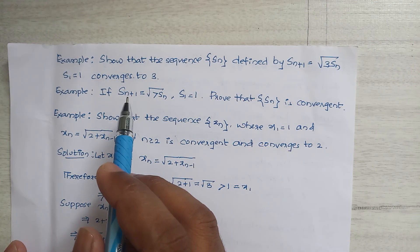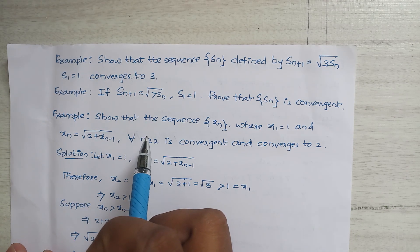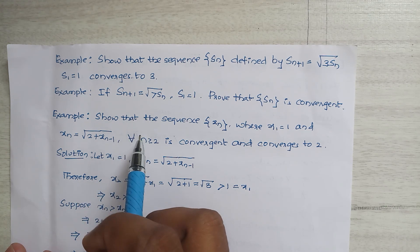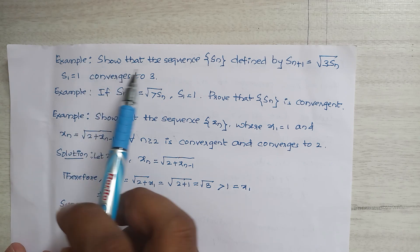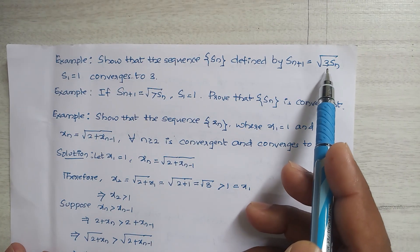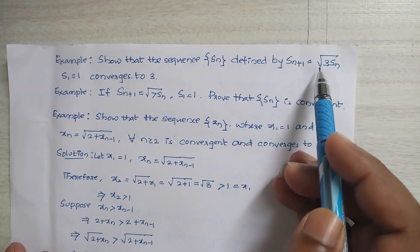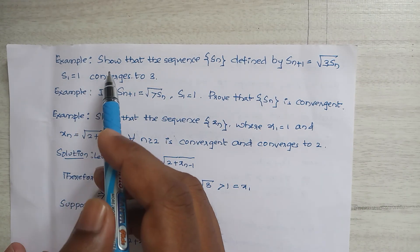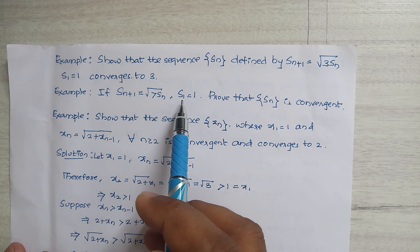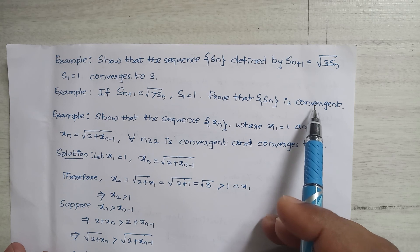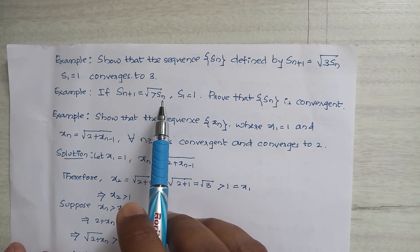Good morning everyone. Let's discuss some more examples based on bounded sequences, monotonic sequences, and convergent sequences — these are important for your examinations. Example: show that the sequence sn defined by sn+1 = √(3·sn) with s1 = 1 converges to 3. I solved this type in the last class, so try to solve it at home. Another example: if sn+1 = √(7·sn) and s1 = 1, prove that sn is convergent. These are homework for you.